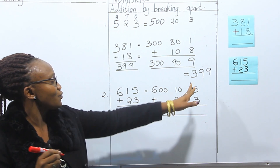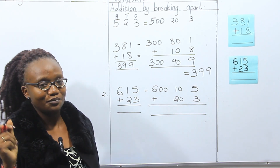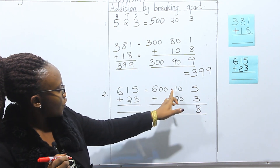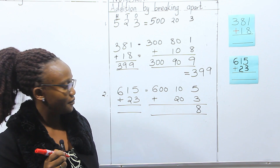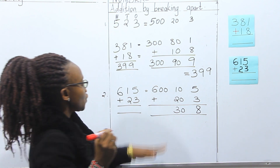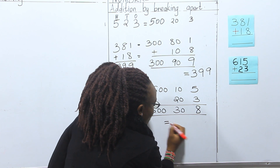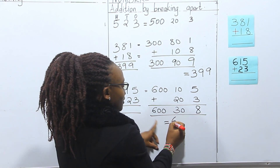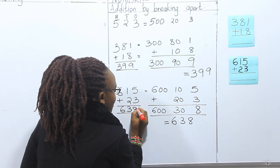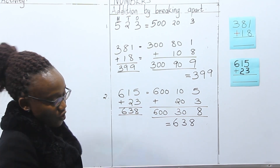So we add: what is 5 plus 3? 5 plus 3 is 8. Then what is 10 plus 20? 10 plus 20 gives us 30. Since we don't have another number in the hundreds, we keep 600. So our final answer is 600 and 38 — that is 638. Well done, learners!